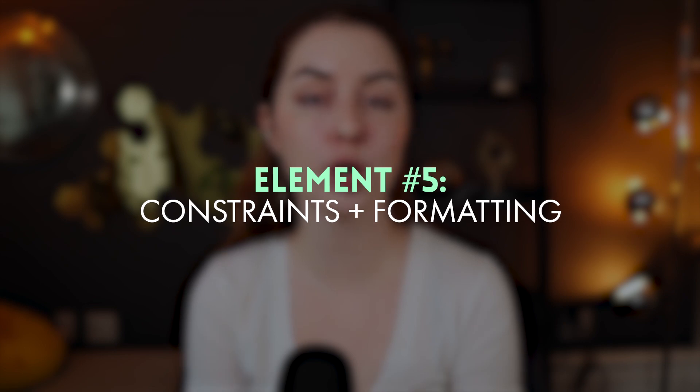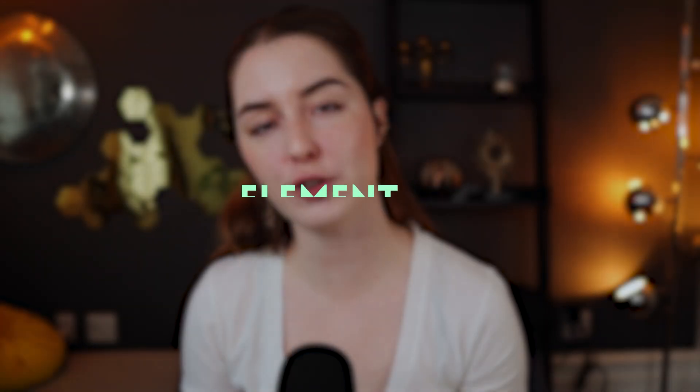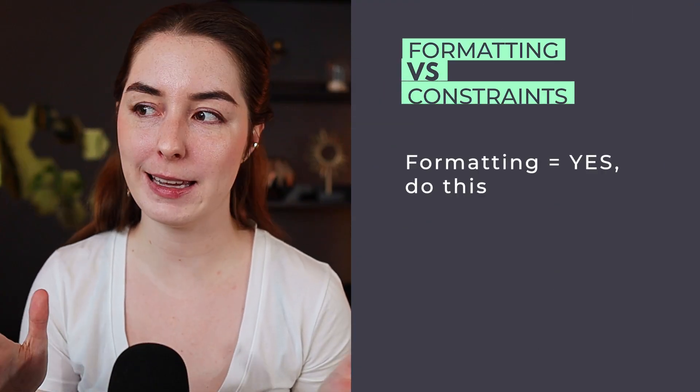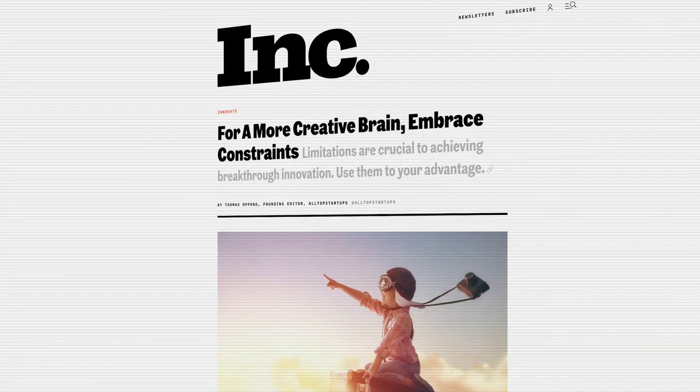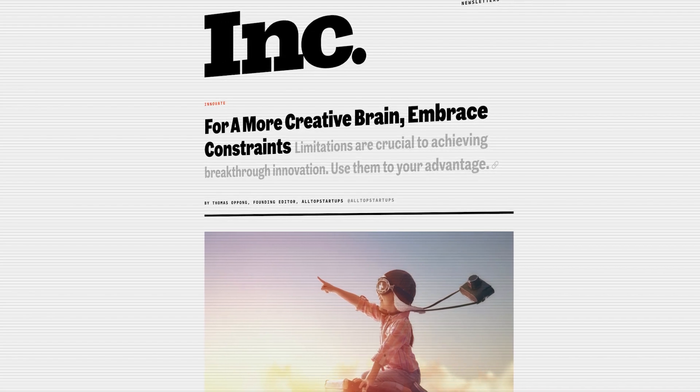The fifth element of our perfect prompt formula is constraints and formatting. Formatting is the 'yes, do this,' while constraints are the 'no, don't do this.' Constraints are important in a counterintuitive way: the more constraints you give AI, generally the more creative the outputs will be. This is true for both AIs and humans — limitations are crucial to achieving breakthrough innovations. The more constraints you're given, the more creative you have to be to solve the problem, which means we very rarely want to give AI free reign.